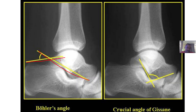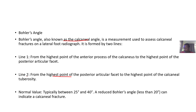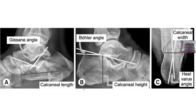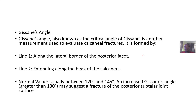So this should be the second line and this should be the first line. For its normal value, it is typically between 25 and 40 degrees. A reduced Böhler's angle — that is, less than 20 degrees — indicates a calcaneal fracture.